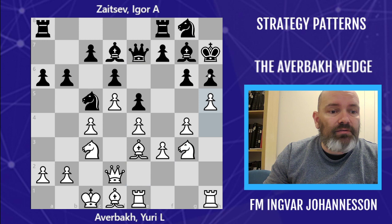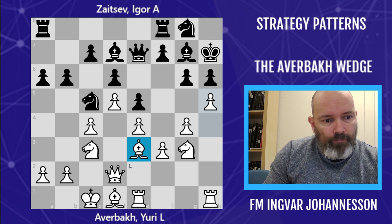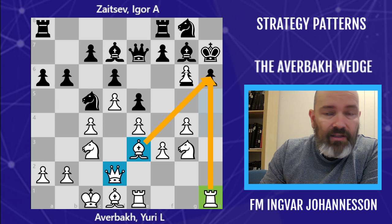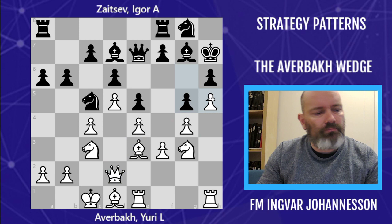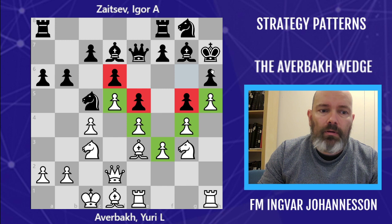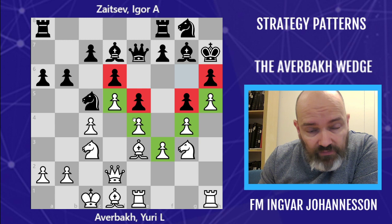Queen e7, h5 — with this big battery, the rook on h1 putting pressure on h6, it looks unbearable for Black to allow White to open the h-file by playing h takes g6. So Black plays g5 to close it down, but this introduces the Averbach Wedge — these very strong pawns. Meanwhile Black's pawns are not as strong. These strong pawns give White a space advantage.